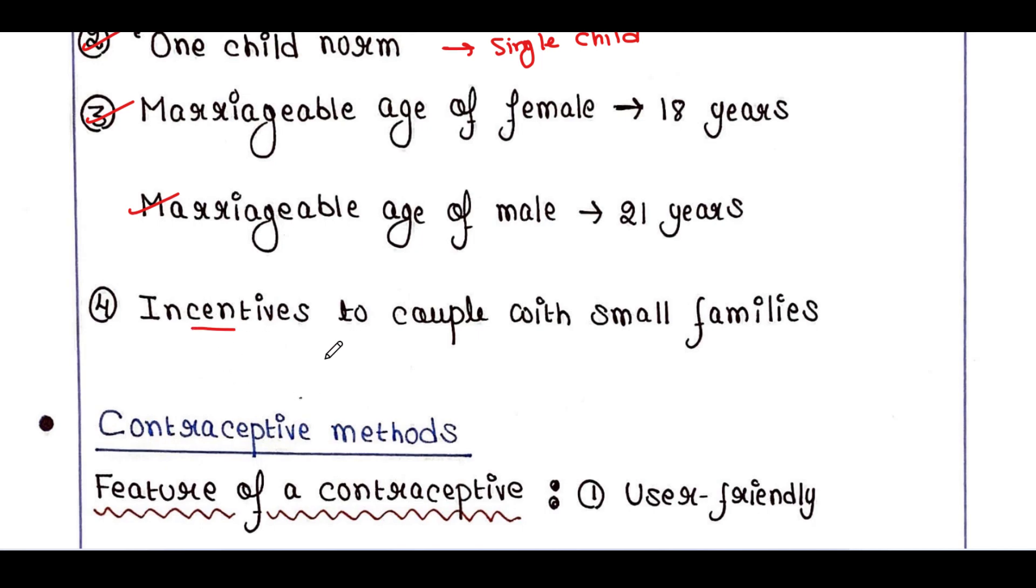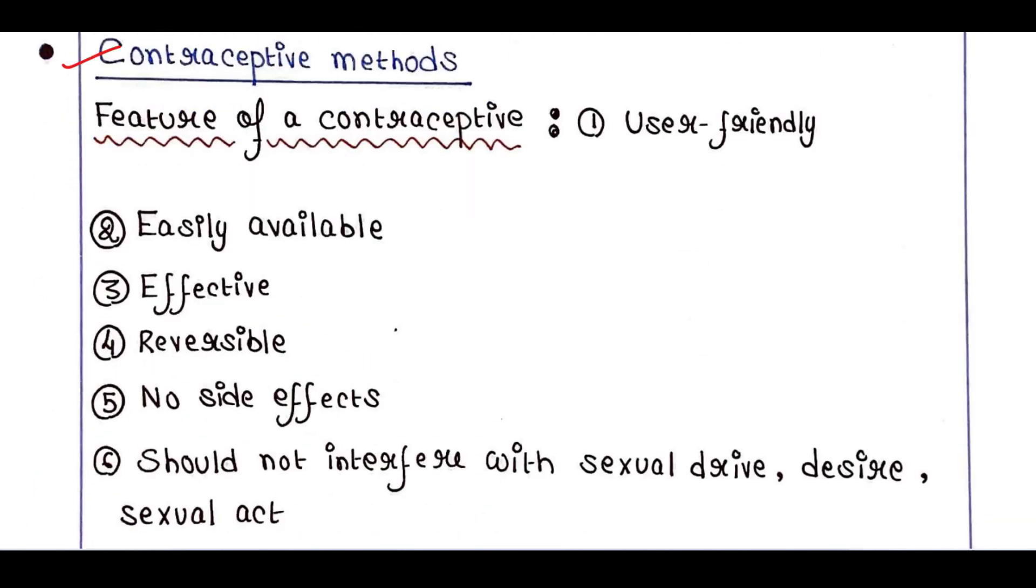So in order to maintain a small family, couples should use some contraceptive methods. So what are the features of an ideal contraceptive? It should be user friendly, it should be easily available, it should be effective enough, it should be reversible. That means when a couple plans for a baby, they can stop the use of contraceptive and it would not hamper their process. And it should not have any side effects and it should not interfere with sexual drive, desire, and sexual act.